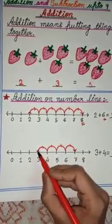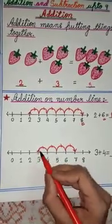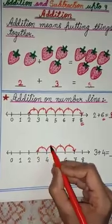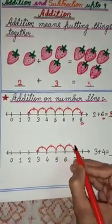Let's start. 3. How many steps? 4 steps. So 1, 2, 3, 4.